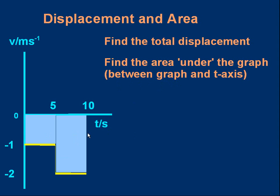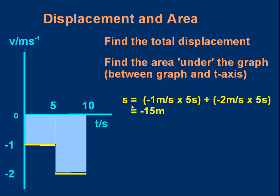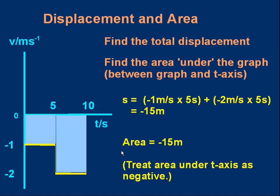The displacement can be done in two sections. For the first five seconds: velocity times time is minus 1 times 5. For the next five seconds: velocity minus 2 times 5. Working those out gives minus 5 and minus 10, totaling minus 15 meters — the object has moved 15 meters in the negative direction. The area is exactly the same calculation: the first block is minus 1 times 5, the next is minus 2 times 5, coming to minus 15 meters. Area below the time axis is treated as negative, corresponding to negative displacement.